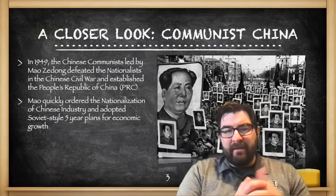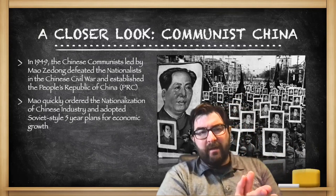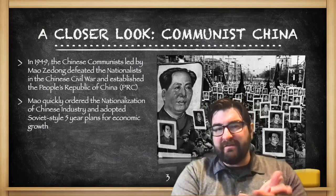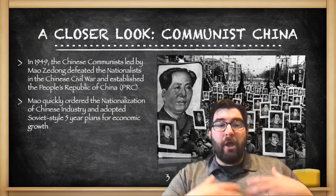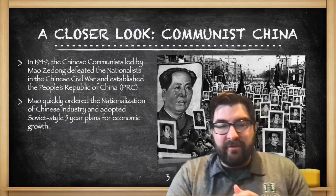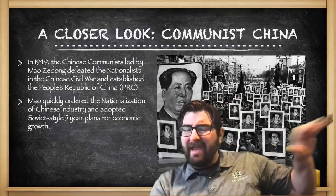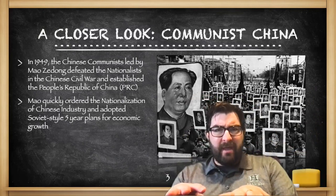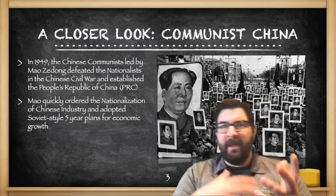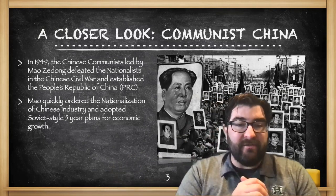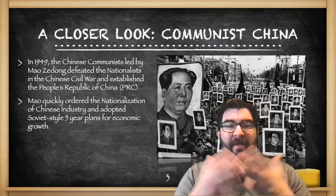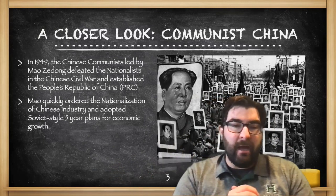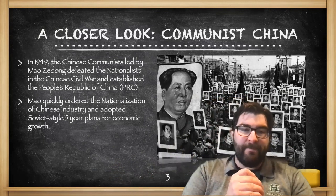In 1949, Chinese communists led by Mao Zedong defeated the nationalists of Chiang Kai-shek in a long-lasting Chinese civil war that actually dated back before World War II. It took a hiatus during the Second World War and then began again in 1945. By 1949, the communists won and China became the People's Republic of China.